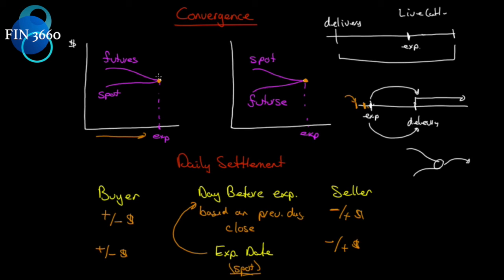As we go through later chapters, we'll see that convergence is not always guaranteed depending on what we're using for the futures contract. There is no such thing as a perfect hedge — there's always some risk. While theoretically convergence should occur, it may not always happen in practice. However, prices will tend toward convergence.